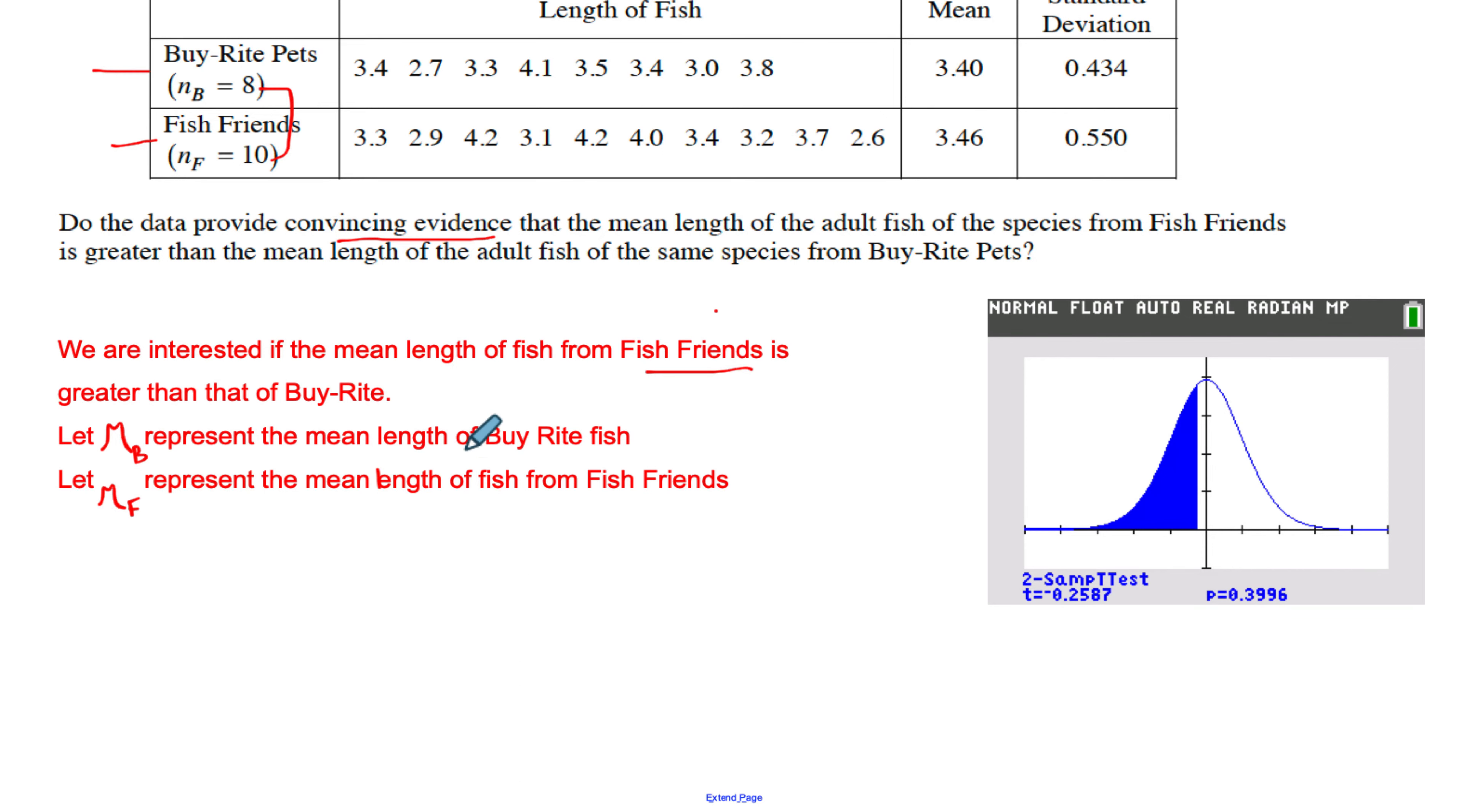So we're going to let μ_B represent the average length from Buy Rite, and then we'll let μ_F represent the mean length of fish from Fish Friends. We have defined them. That's what we're looking for. We need to write up our hypotheses.